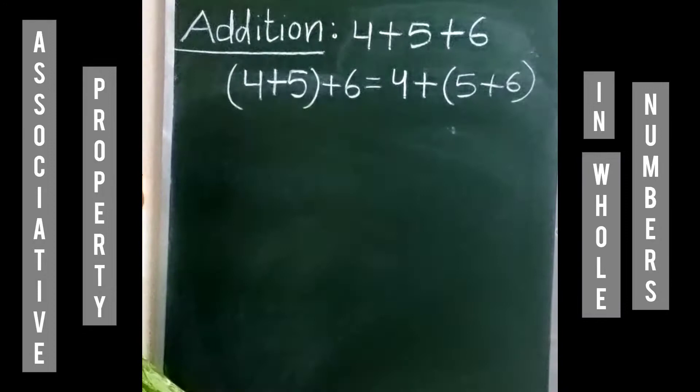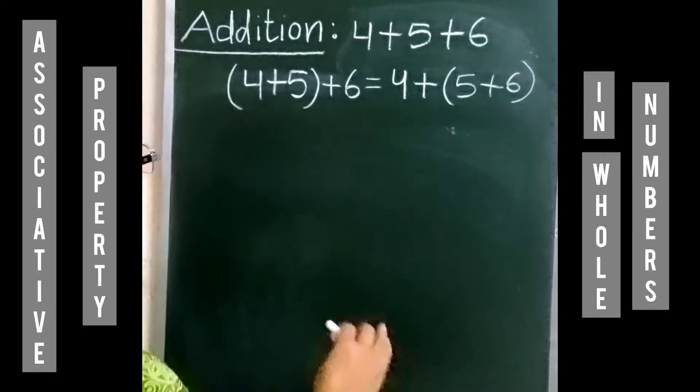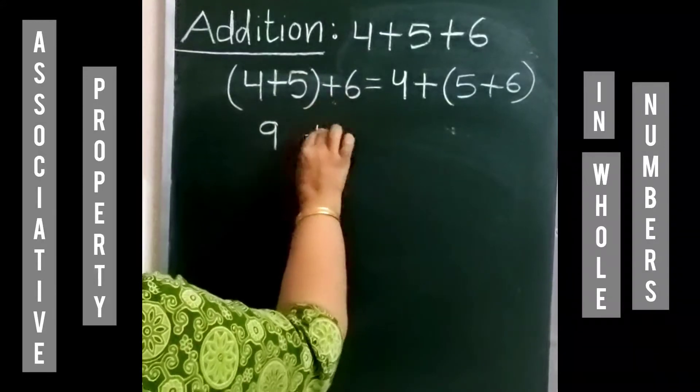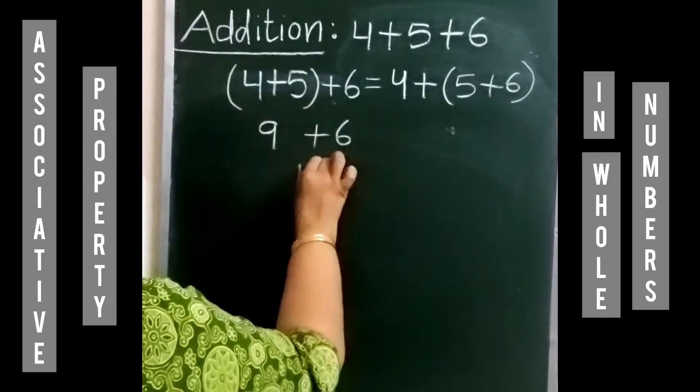These are the two ways we can make the groups of these numbers. First of all, we will add 4 and 5 which will be equal to 9, and then we will add 6, which will be equal to 15.